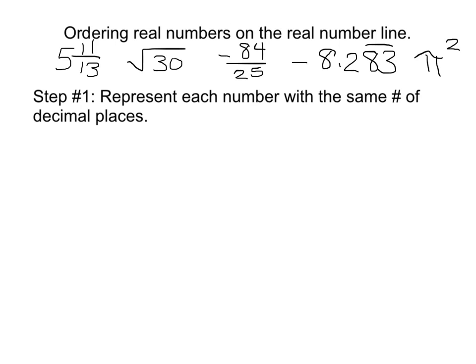Alright, so let's take 5 and 11 thirteenths, the square root of 30, negative 84 over 25, negative 8.283 with 8, 3 repeating, and pi squared.